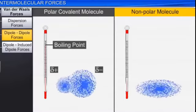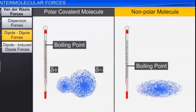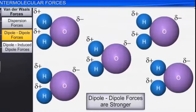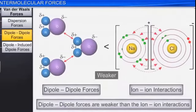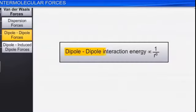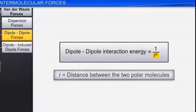In this case, if you ask why polar covalent compounds have a higher boiling point than non-polar covalent compounds, it is because the dipole-dipole force is strong. Note: this is dipole-dipole force, not hydrogen bonding. If we compare with ion-ion interaction, the dipole-dipole force is weaker.